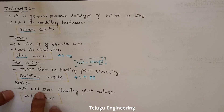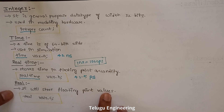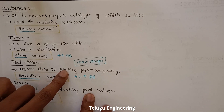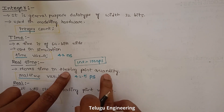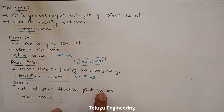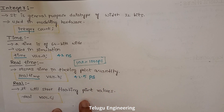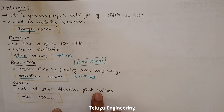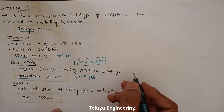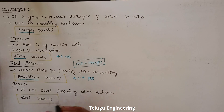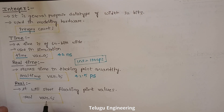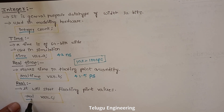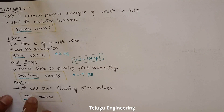Real means it stores your floating point values. If you have time expressed as a floating point quantity, you use the real data type. This is for storing values in the form of floating point numbers. The declaration is: 'real var_c' — where 'real' is the data type and 'var_c' is the variable name. This is how we declare any real data type.